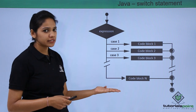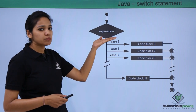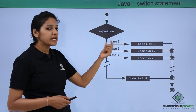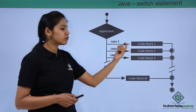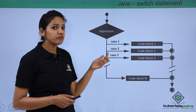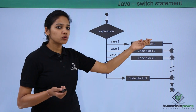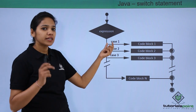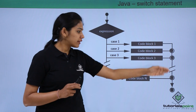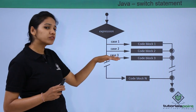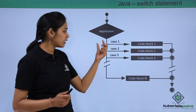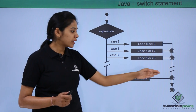Here a flowchart is provided for better understanding. The expression checks if the grade equals a value. If it equals A, it goes to case 1 and executes that code block. If checking for B, it goes to case 1 — is it A? No — then case 2 — is it B? Yes — execute that block and terminate. If none of the cases match the expression, control falls through to the default value and executes that block.